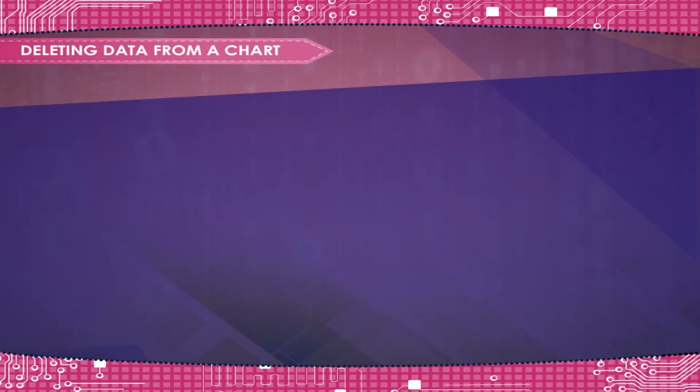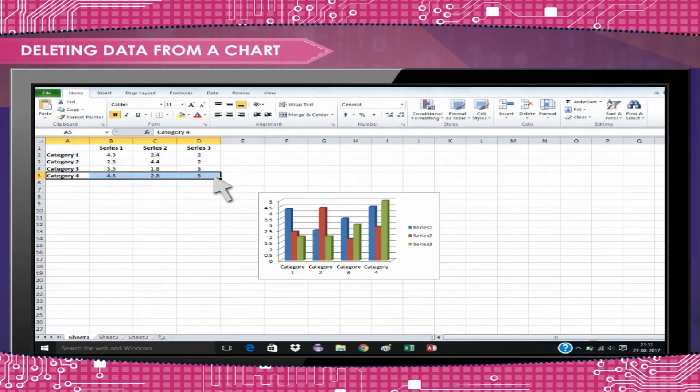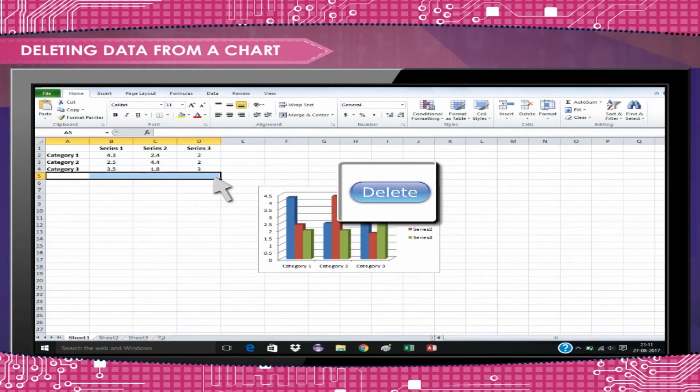Deleting data from a chart: Click the data you want to remove from the chart. Handles appear on the data series. Press the Delete key to delete the data from the chart.